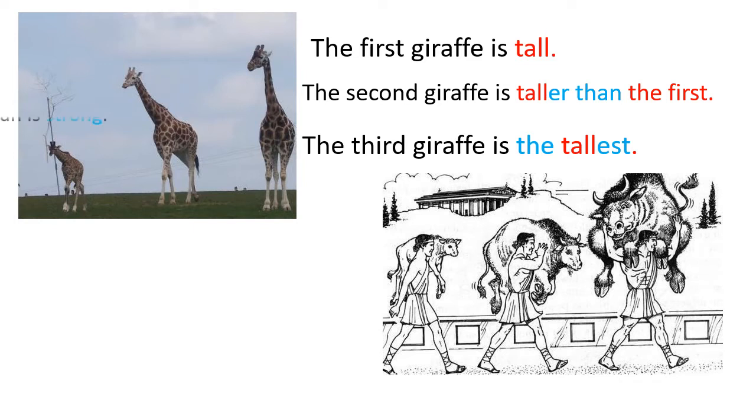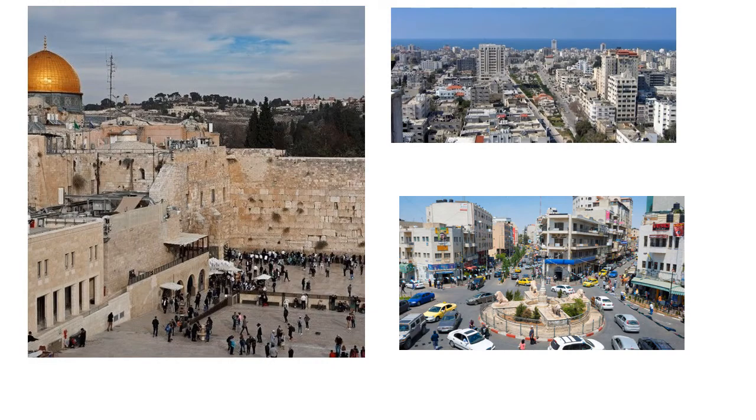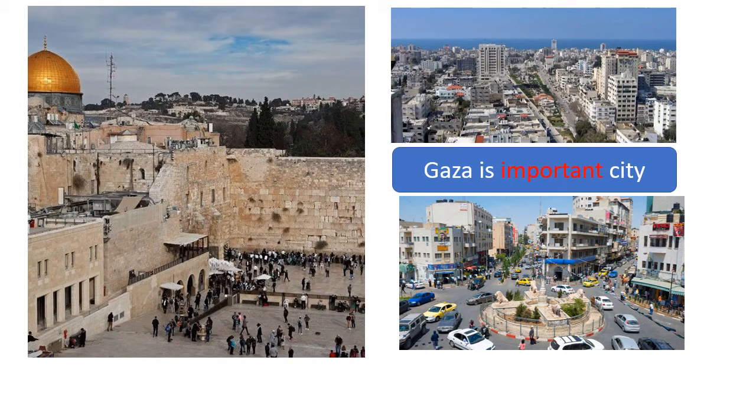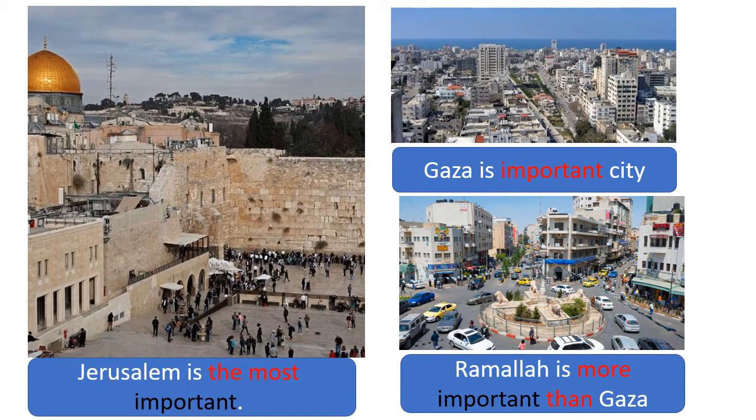Look to the second picture. We have the first man is strong. This is your turn. You are right. The second man is stronger than the first. But the third man is the strongest. Now, what if it is a big or a long adjective? Look to the first picture here. We are talking about Gaza, and let's say that Gaza is an important city. But Ramallah is more important than Gaza. Here we add what? More before the adjective and then after the adjective. What about Jerusalem? Jerusalem is the most important.